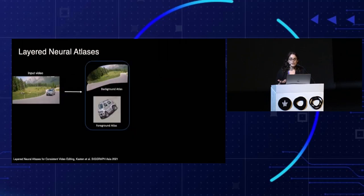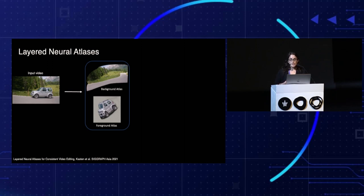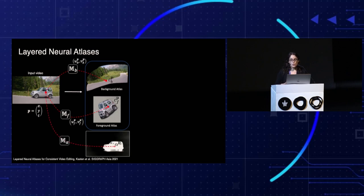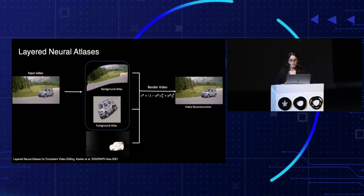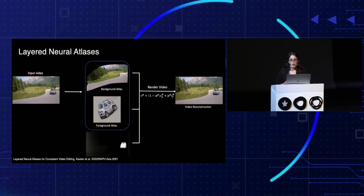In order to overcome this issue, we use our recent work of layered neural atlases, which decomposes a video into a set of 2D atlases. Each atlas can be treated as a unified 2D image representing the entire foreground or background throughout the video. Each video location is mapped to the atlases, giving us the corresponding RGB color. Additionally, each video location is assigned an opacity value, stating how much of the foreground is observed at that location. This representation allows us to reconstruct the video using alpha blending, and everything is trained in a self-supervised manner.